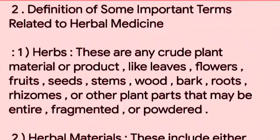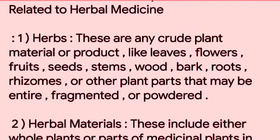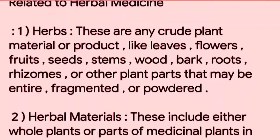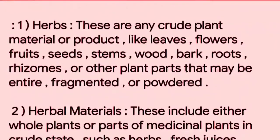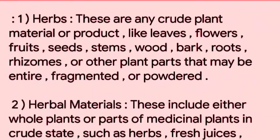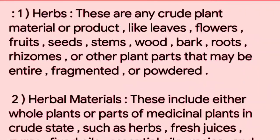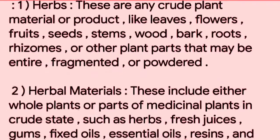These reasons have increased the dependency on plant materials as a source of medicines for various human ailments. Definition of some important terms related to herbal medicine. 1. Herbs: These are any crude plant material or product, like leaves, flowers, fruits, seeds, stems, wood, bark, roots, rhizomes, or other plant parts that may be entire, fragmented, or powdered.